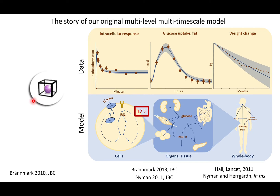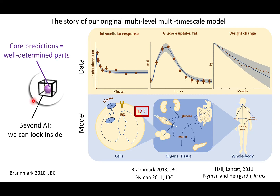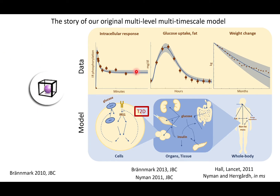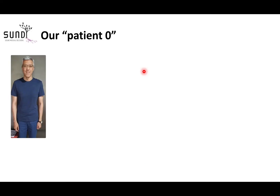Our group's logotype shows that these are mechanistic models — not black-box models. We can look inside them and see the mechanisms. We also always show predictions with uncertainty, so the shaded areas here represent predictions with uncertainty.